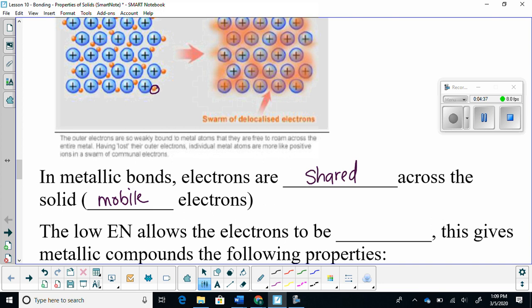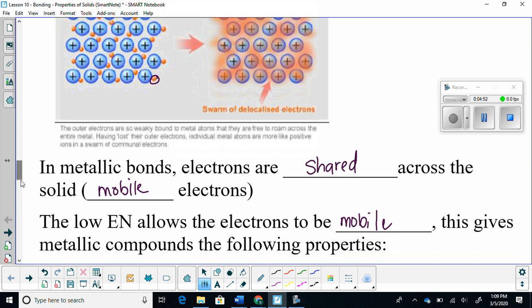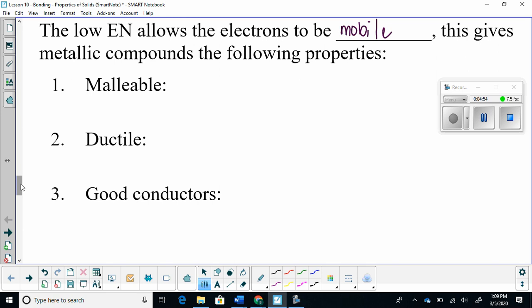So they can freely move across the metal. This contributes to the electron being a mobile electron, which gives metallic compounds the following properties. Because these electrons are mobile, they give us the following properties. The first one is malleable. Does anybody know what malleable is? It bends.